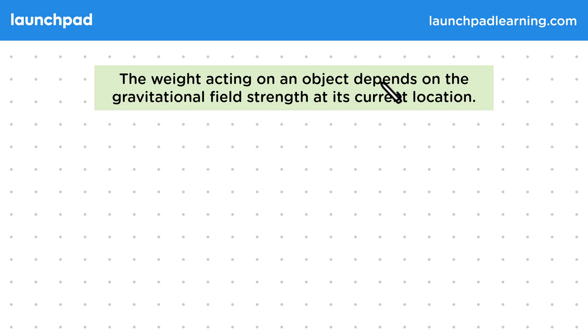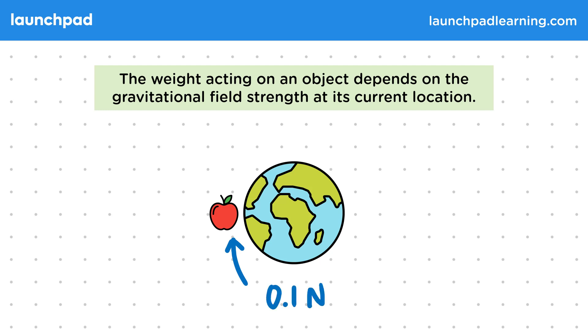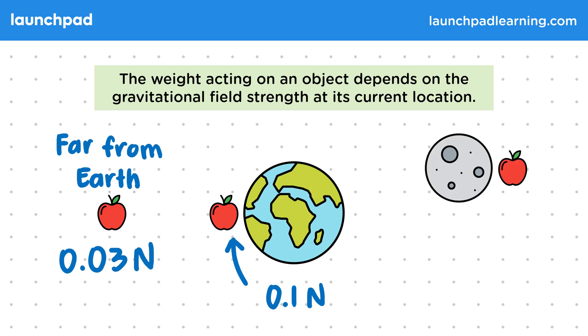Well, the weight acting on an object depends on the gravitational field strength at its current location. The gravitational field strength is a measure of how strong the gravitational force from the object will be. So as an example, an apple at the Earth's surface experiences a strong gravitational force. However, an apple far from the Earth's surface experiences a weaker force as the field strength decreases with distance. An apple at the Moon's surface experiences an even weaker force as the Moon has a smaller mass and therefore a weaker field.